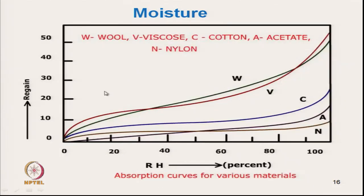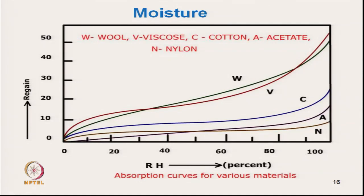These are the typical moisture regain curves. At different relative humidity levels, different materials will have different regain values. That is why we must specify moisture regain at standard conditions — the values seen earlier are at standard atmospheric conditions of 65% relative humidity. If we increase the relative humidity of the atmosphere, obviously the regain will be higher.